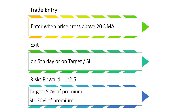We enter an at-the-money call option whenever the price of a stock crosses above the 20-day moving average, and sell or buy an at-the-money put when the price crosses below the 20-day moving average. We exit the trade on the fifth day or when the target or stop-loss is hit.